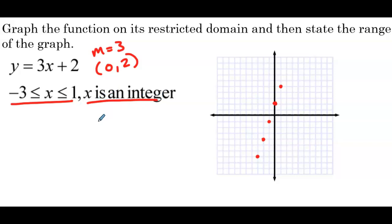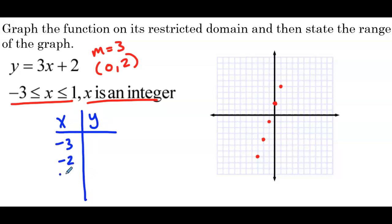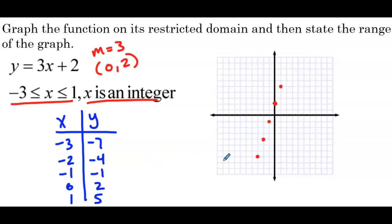Now we deal with the fact that x is an integer. The integers in this domain are negative 3, negative 2, negative 1, 0, and 1. Plugging each into y = 3x + 2 gives y values of negative 7, negative 4, negative 1, 2, and 5. The key question is: do we connect the points with a line? The answer is no — connecting them would include non-integer x values like 0.5 or 0.9, which are not integers and shouldn't be included.